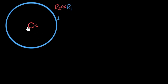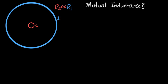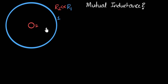We have two concentric coils, one having a radius much smaller than the other, and our goal in this video is to calculate the mutual inductance of the system. We've seen before that you can either calculate the mutual inductance of the outer coil with respect to the inner, or the inner with respect to the outer. Both give the same answer because there's only one mutual inductance for a pair of coils. However, only one of them is easy to calculate — the other is a complete nightmare.